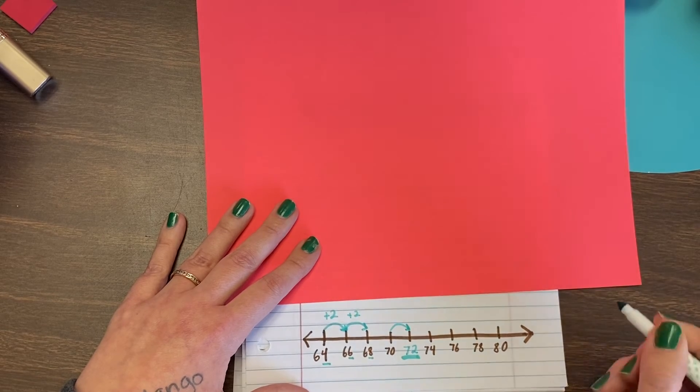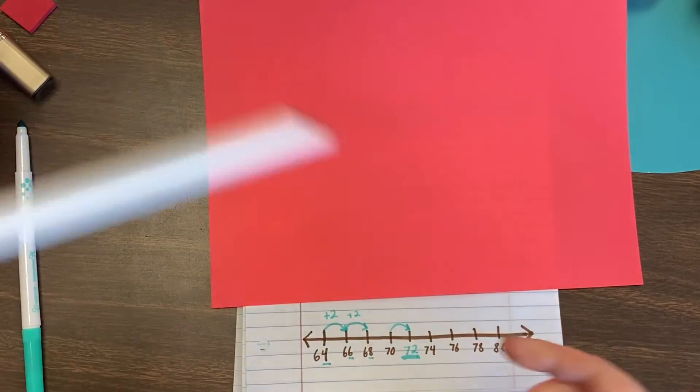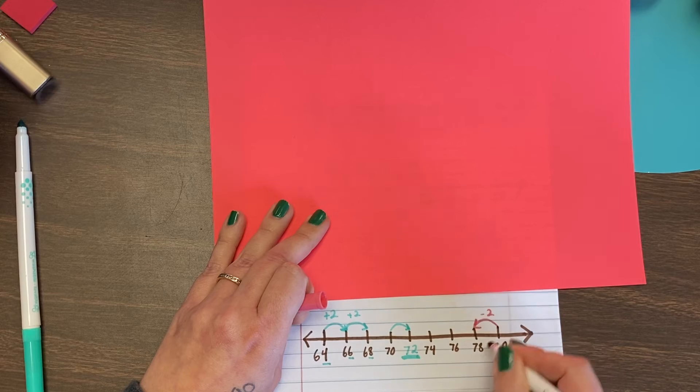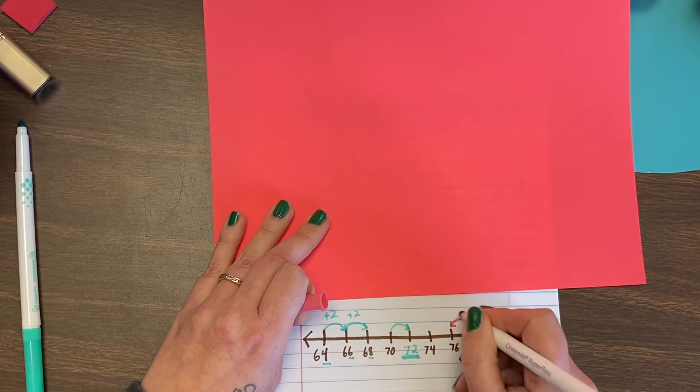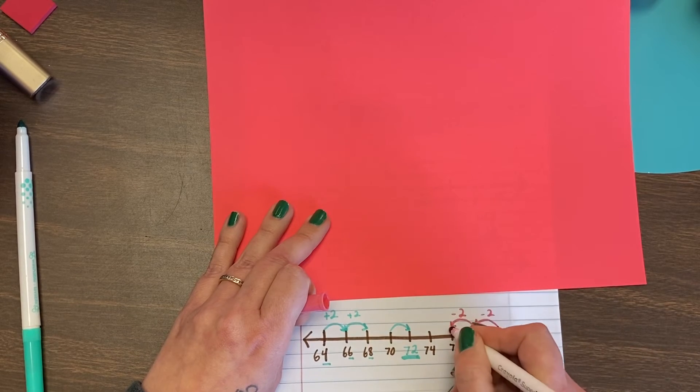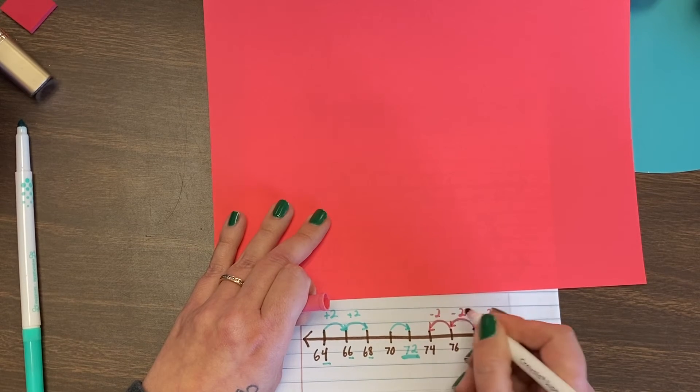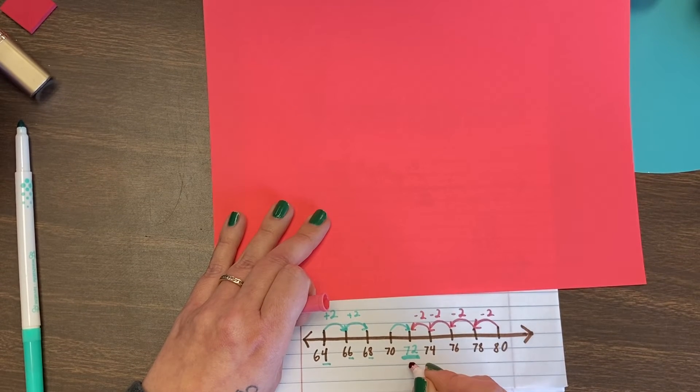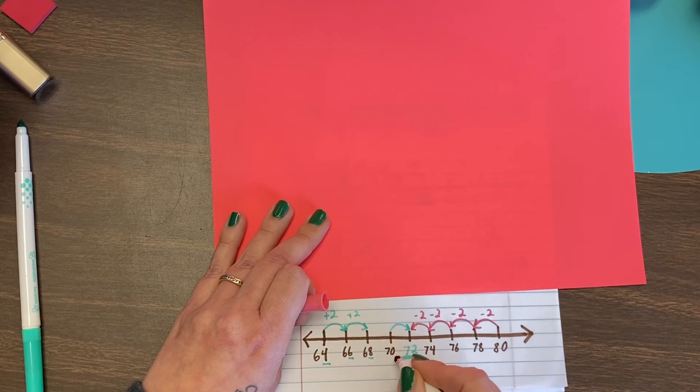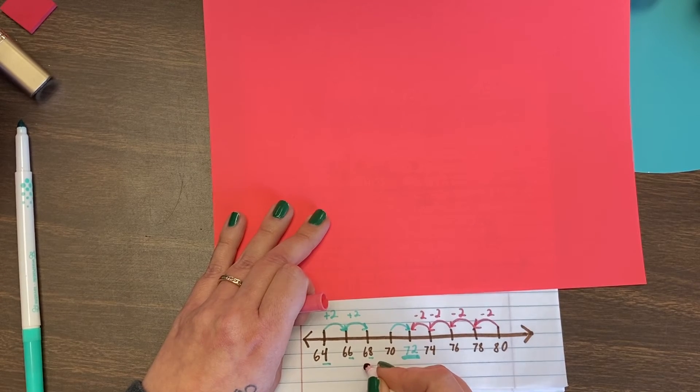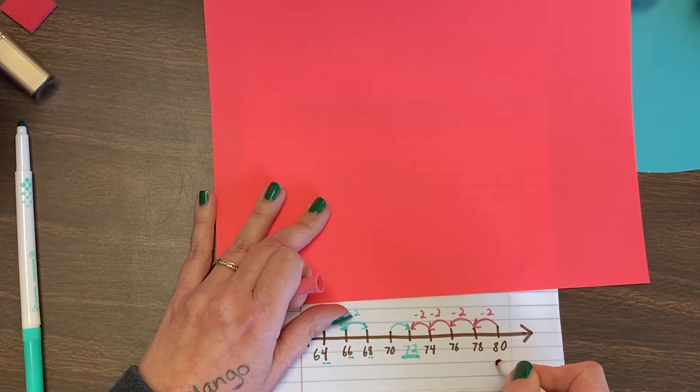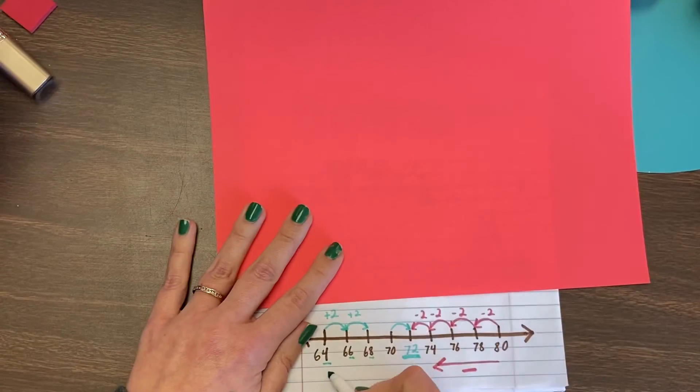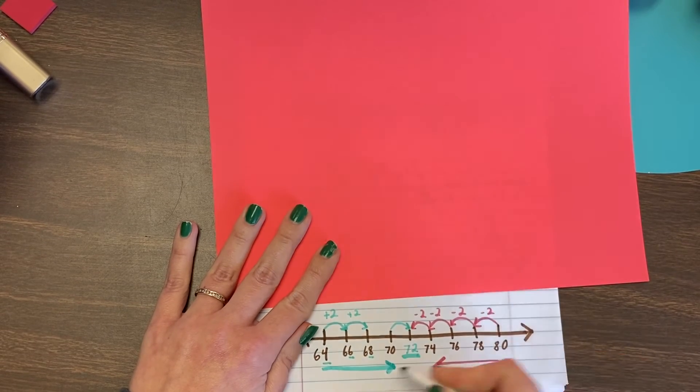Another way that you could look at this would be to go backwards. 80 minus two is 78. Minus two is 76. Minus two is 74. 74 minus two is 72. And we could go on. 72 minus two is 70. 70 minus two is 68. As you know, on a number line, when we move to the left, we are doing subtraction. When we move to the right, we are doing what? Addition.